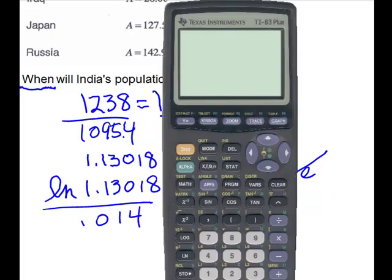We'll bring up our calculator and we'll take the natural log of 1.13018. Make sure you close the parenthesis for your log, divided by 0.014, enter, and we get 8.7412.